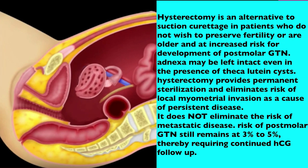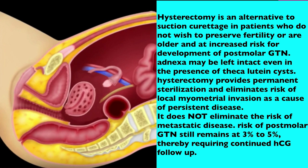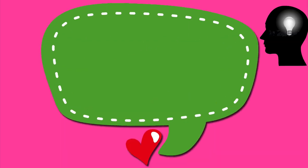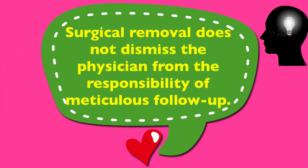Hysterectomy is an alternative to suction evacuation in patients who do not wish to preserve their fertility or are older and at increased risk of development of post-molar GTN. The adnexa may be left intact even in the presence of theca-lutein cysts. Hysterectomy provides permanent sterilization and eliminates the risk of local myometrial invasion as a cause of persistent disease. Because of the potential for metastatic disease even after hysterectomy, risk of post-molar GTN still remains at 3 to 5 percent, thereby requiring continued HCG follow-up. Surgical removal of the uterus does not dismiss the physician from the responsibility of meticulous follow-up.